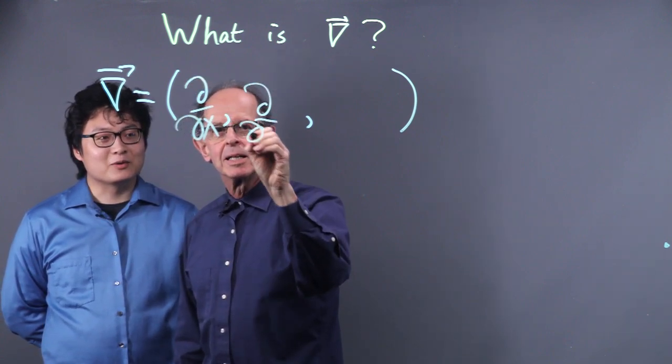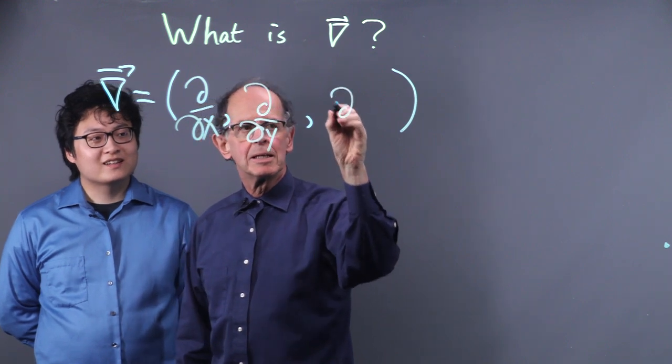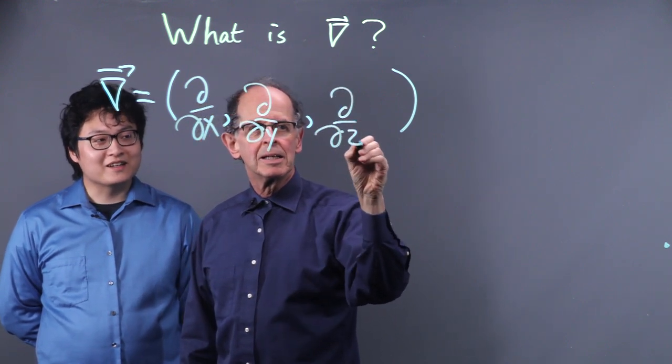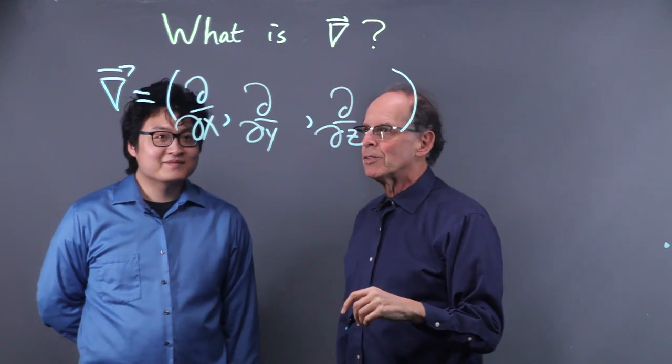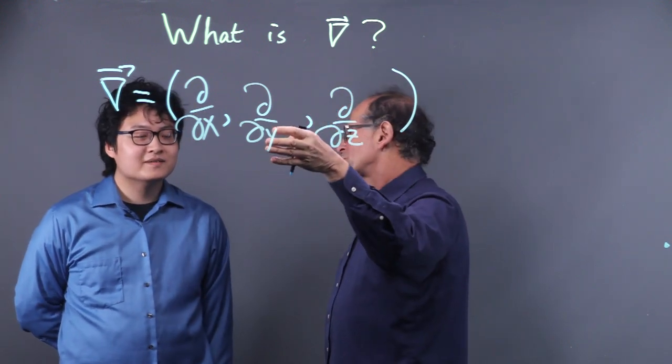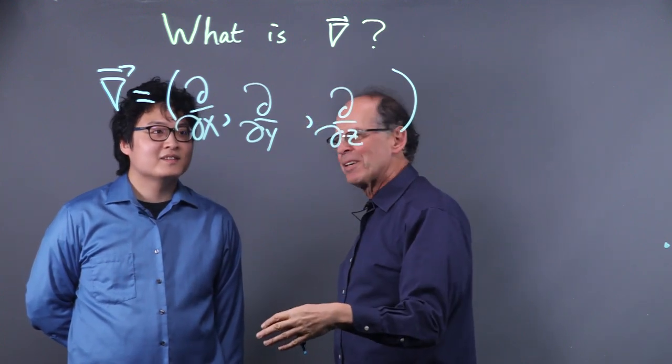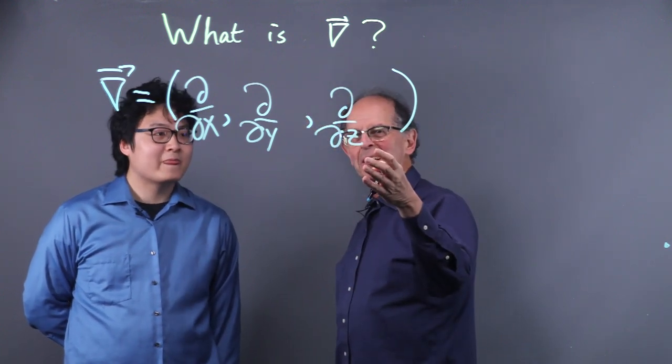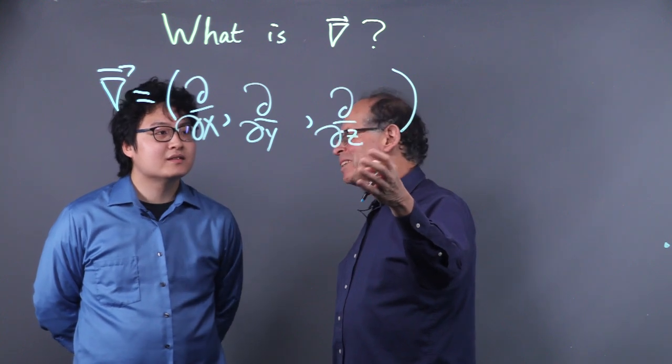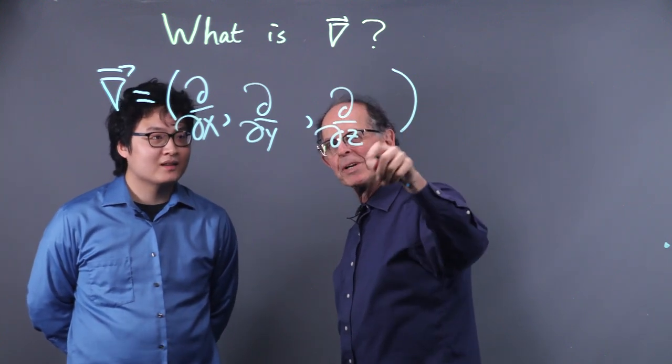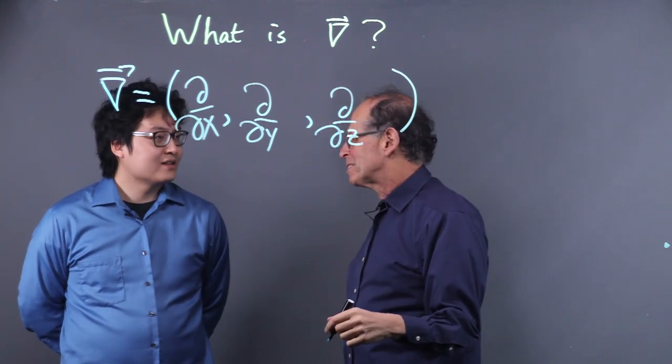∂/∂x, ∂/∂y, ∂/∂z. OK. So normally, when we have these partial derivatives, we have something that's getting differentiated. And here there's nothing. So this is like it's some incomplete. So these are operations waiting to be done.